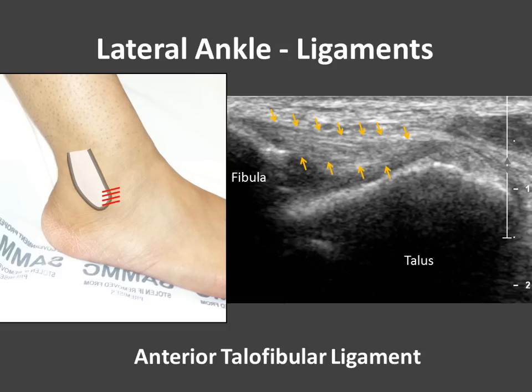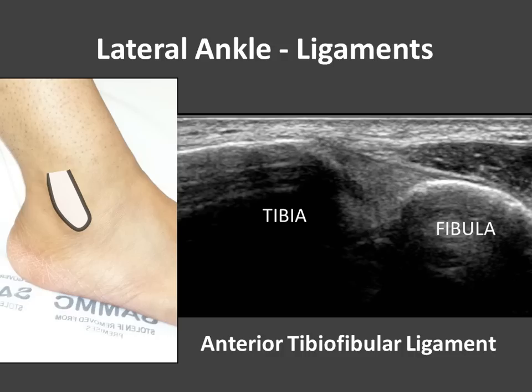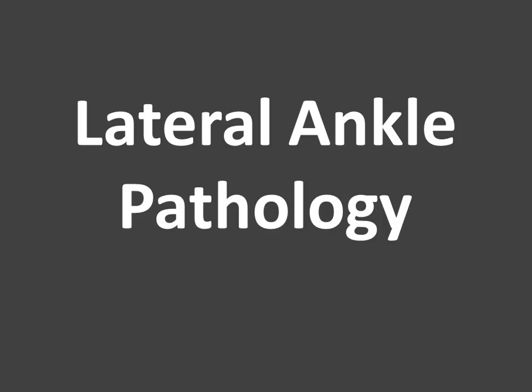Then there are the lateral ankle ligaments. The first is the anterior talofibular ligament — here we have a hypoechoic ligament crossing the fibula and talus. Then the calcaneofibular ligament — if we move the probe slightly posterior and angle upward, we'll catch it. You'll notice it runs just deep to the peroneus brevis and peroneus longus tendons. And then lastly, the anterior tibiofibular ligament — coming up a little higher in a more transverse position.